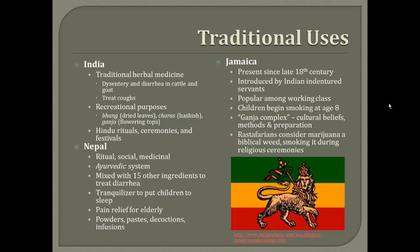In Nepal, Cannabis sativa is used for ritual, social, and medicinal purposes. The Ayurvedic system uses powders and decoctions that are made by dissolving in hot and cold water, or milk, honey, and oil. They have used it mixed with 15 other ingredients to treat diarrhea, to put children to sleep, and as pain relief.